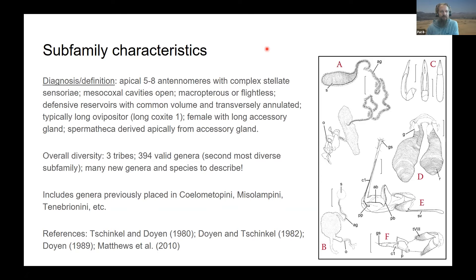Eventually we found out that flightlessness evolved separately multiple times, so it wasn't a really good way to classify these beetles. The defensive reservoirs illustrated here have a common volume in the middle and are annulated transversely, as in some other groups of tenebrionids. They usually have a very long ovipositor — usually the entire length of the abdomen — which is quite interesting how it's tucked inside the abdomen. When you stretch it out you see various sclerotites, rods, and different parts that would be muscle attachments to deploy this very long ovipositor.